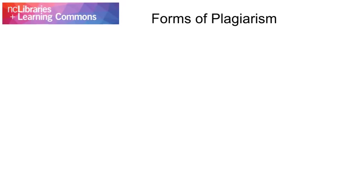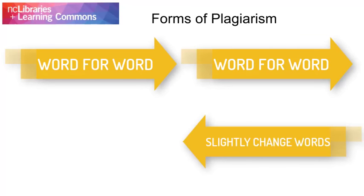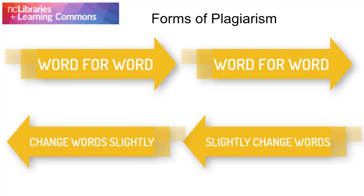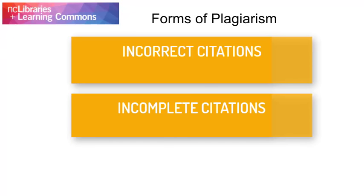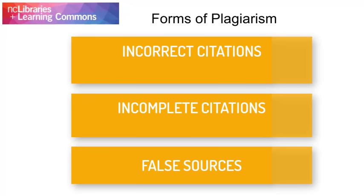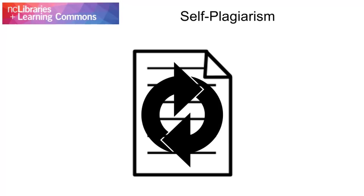There are many different forms of plagiarism. Some are obvious — for example, copying another person's work word for word, or changing the words slightly and including it in your own paper without providing a credit to the original. Providing incorrect or incomplete citations or citing false sources are also forms of plagiarism. You can even plagiarize your own work if you resubmit an assignment you created for a different class. The purpose of doing a research assignment is to come up with new ideas. You can build on your ideas, but you need to cite the original source.